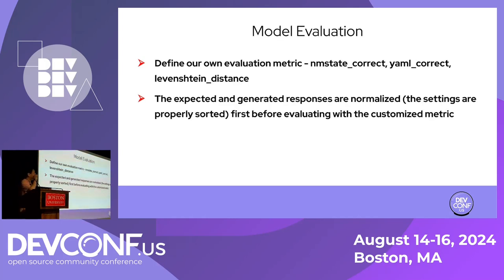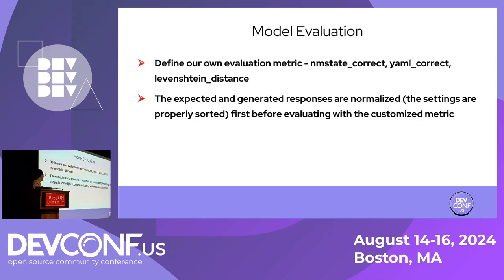In model evaluation we define our own metrics: NMState correct, YAML correct, and Levenshtein distance. NMState correct detects whether the generated response conforms to the NMState schema and can directly be applied by the 'nmstate control apply' command. YAML correct determines whether the generated YAML conforms to YAML syntax and semantics. Levenshtein distance — also known as edit distance — calculates the distance between the generated responses and the expected responses. Before evaluating, expected and generated responses are sorted first so we guarantee proper comparison.